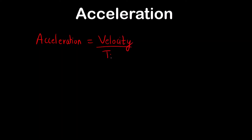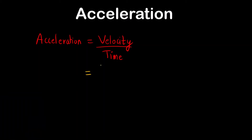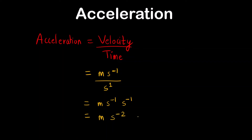Now let us look at acceleration. Acceleration is velocity per unit time. The unit of velocity is meter per second, and the unit of time is second, so the unit of acceleration becomes meter per second squared, or meter second raised to minus two. This is a very important unit to remember.